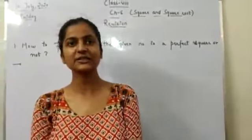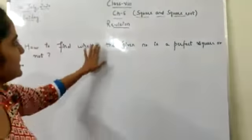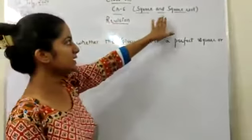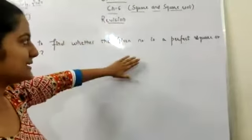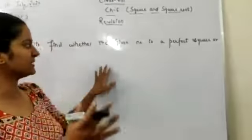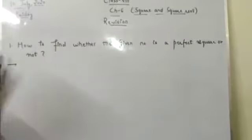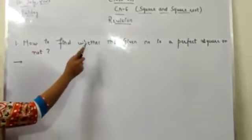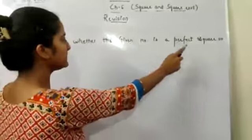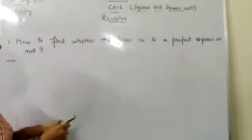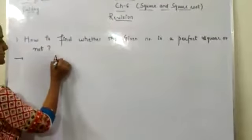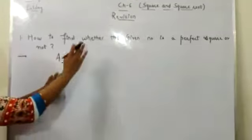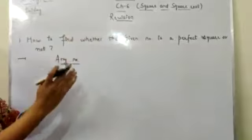Good morning everyone. Today we are going to revise chapter number 6, and the name of the chapter is Square and Square Root. We will discuss some main topics from this chapter. Starting with topic number 1, we will check how to find whether the given number is a perfect square or not. A number will be given and we have to check whether that number is a perfect square or not.